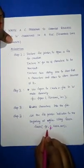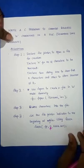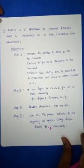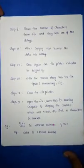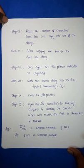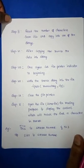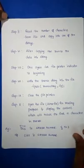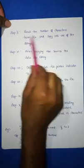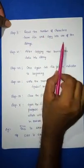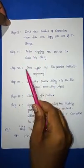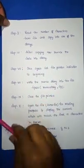Zero means at the beginning. You write fseek(fp, 0, SEEK_SET) — SEEK_SET always starts from the beginning, and zero means it starts from the first position. In step five, read the N characters from the file and copy them into one of the strings. The user provides N, and those N characters are read and copied into one string. In step six, after copying, reverse the data into another string.